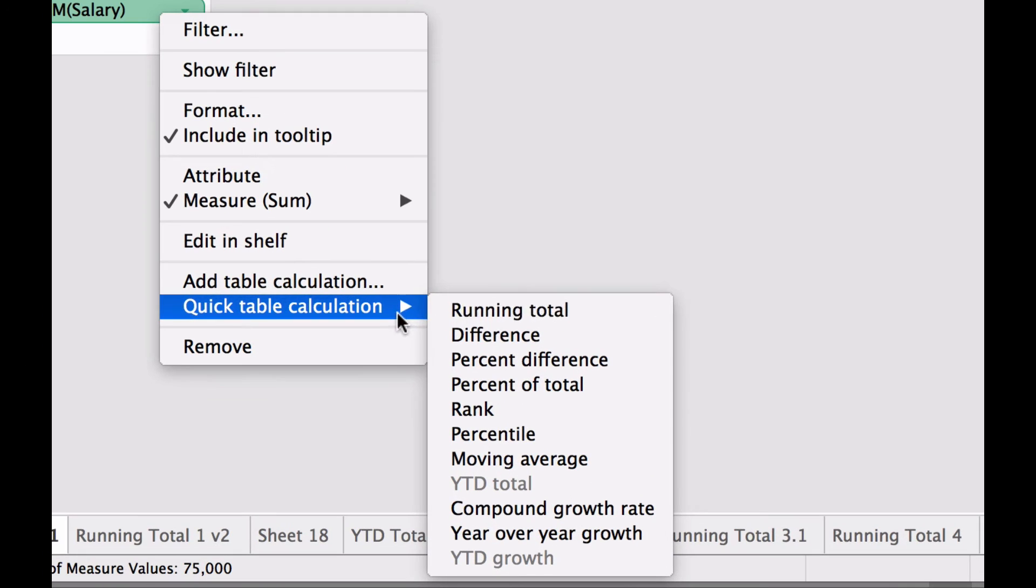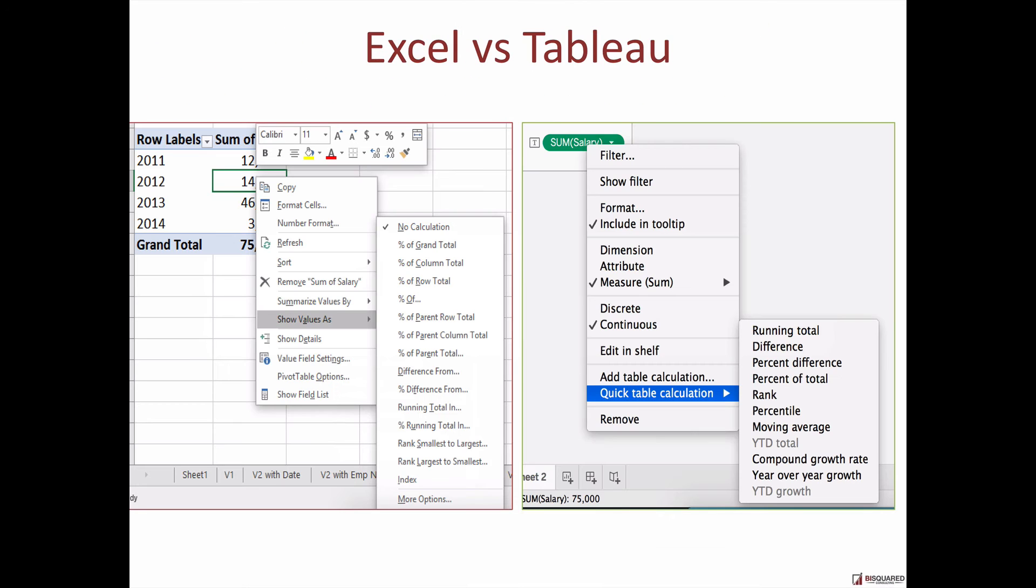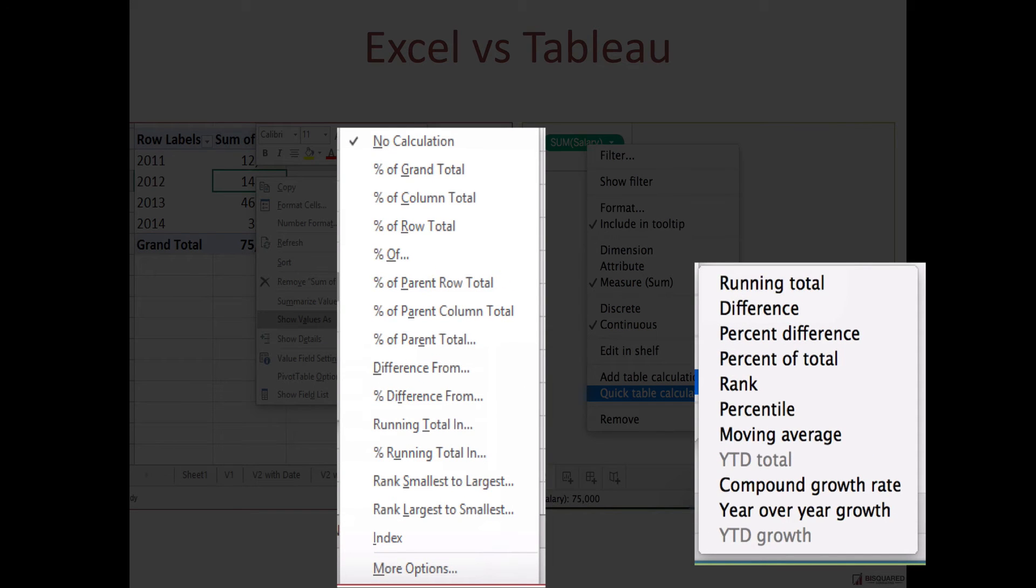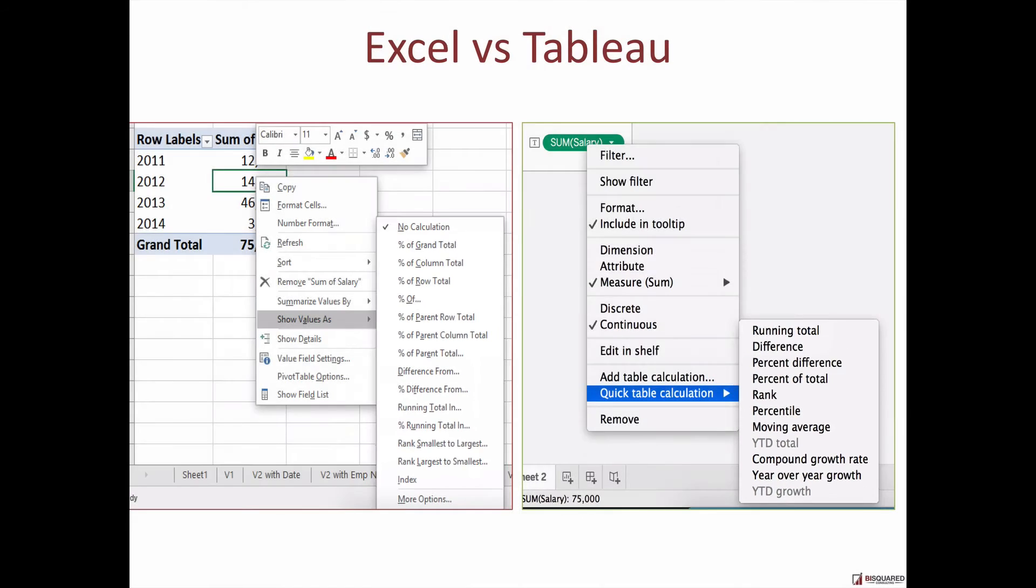Then I launched Tableau and I went to this list of quick table calculations: running total, difference, percentage difference, percentage of total, rank. Oh my god, this looks quite similar.